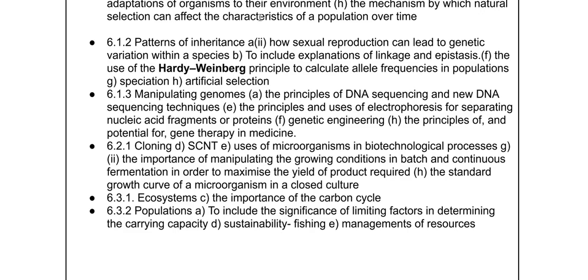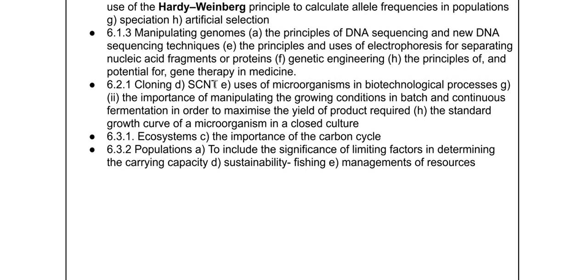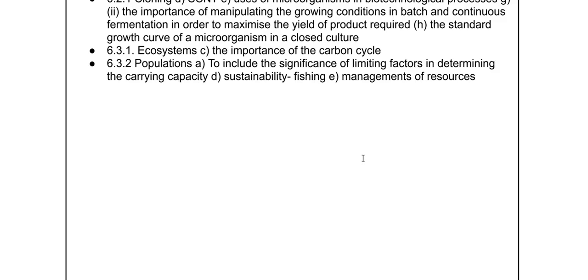In Module 6 inheritance, topics covering how we get variation — epistasis, linkage, Hardy-Weinberg, speciation, and artificial selection — haven't been on for ages. Speciation could link back to natural selection. In manipulating genomes, the Sanger or chain terminator technique, high-throughput sequencing, electrophoresis, genetic engineering, and gene therapy haven't been asked for a while — gene therapy could link into stem cells. Somatic cell nuclear transfer in cloning hasn't been on for a while, nor have uses of microorganisms in biotech including batch and continuous processes, the standard growth curve in closed culture, and in ecosystems, the carbon cycle and management of resources such as sustainable fishing.